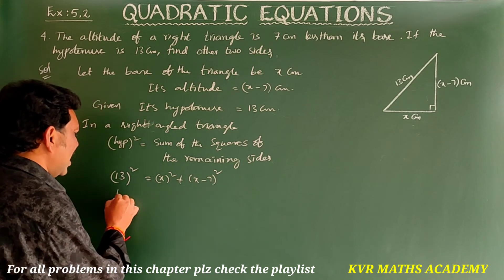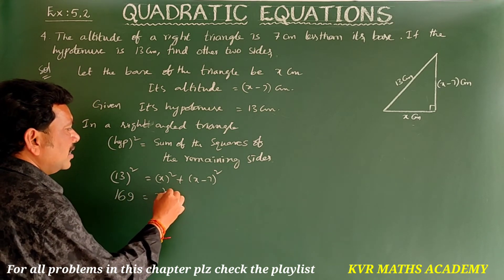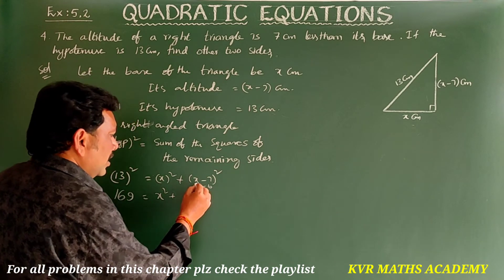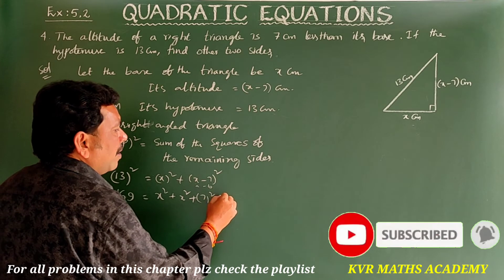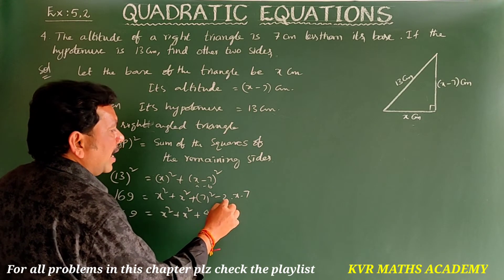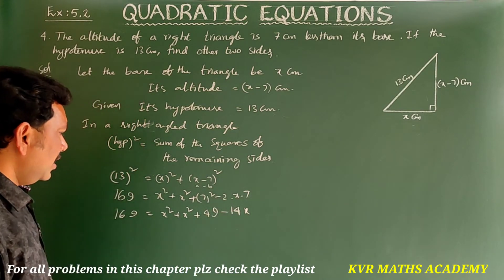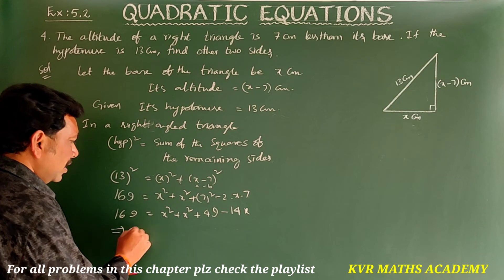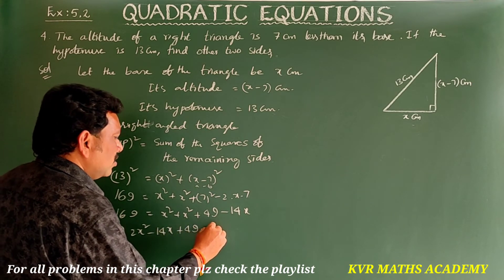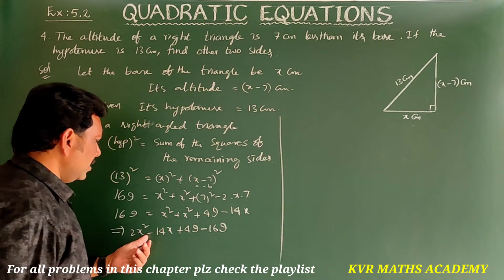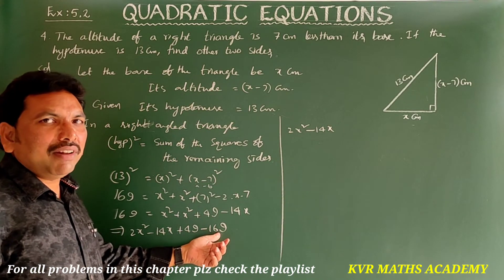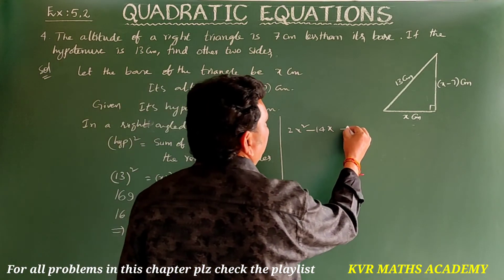Expanding using (a minus b)² = a² minus 2ab plus b²: 169 equals 2x² minus 14x plus 49. Transferring 169 to the other side: 2x² minus 14x plus 49 minus 169 equals 0, so 2x² minus 14x minus 120 equals 0. Dividing by 2: x² minus 7x minus 60 equals 0.